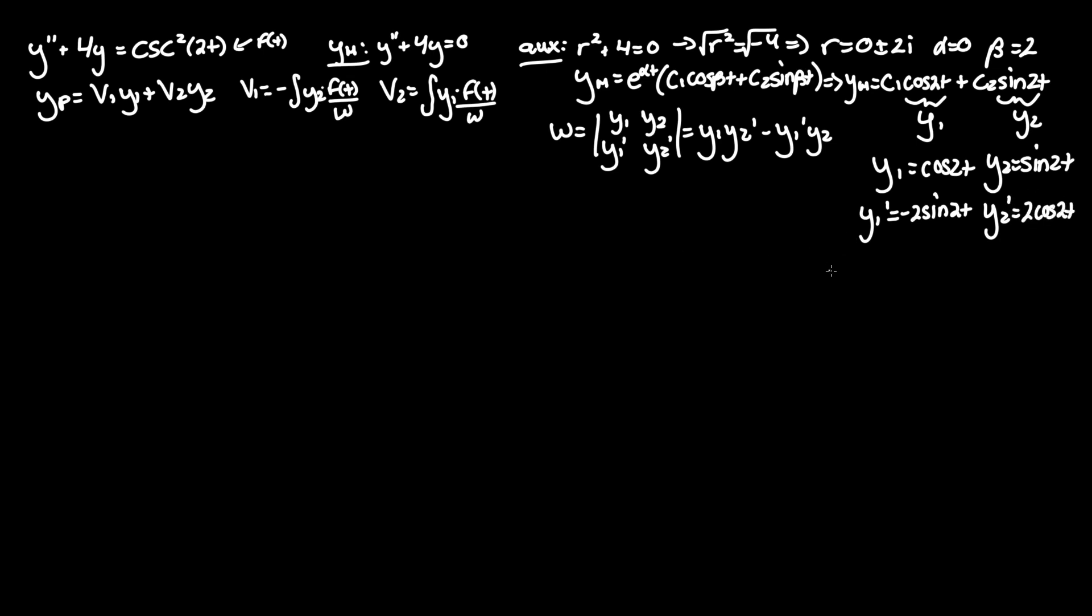Plugging that into our Wronskian term: y1 is cosine 2t times y2 prime, 2 cosine of 2t, minus y1 prime, negative 2 sine of 2t, times y2, sine of 2t. Now multiplying that means it's equal to 2 cosine squared of 2t plus 2 sine squared of 2t.